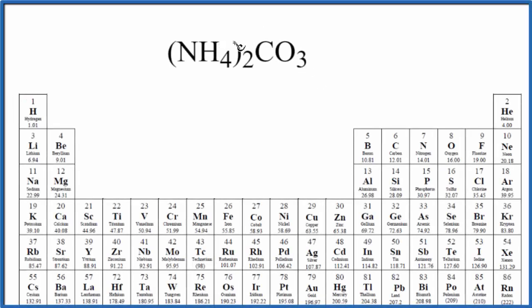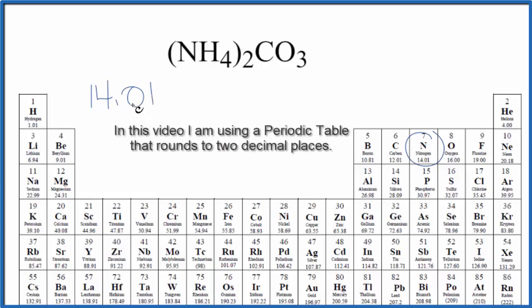In this video, we'll find the molar mass for ammonium carbonate. On the periodic table, we'll find nitrogen, which is 14.01 grams per mole. I won't write grams per mole each time. Let's do that at the end.